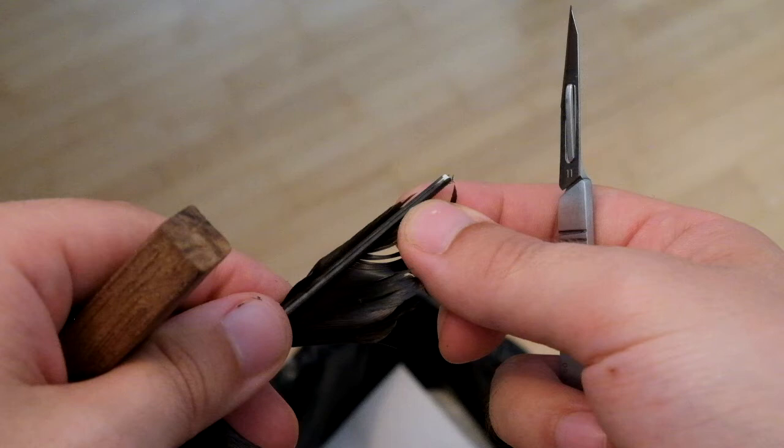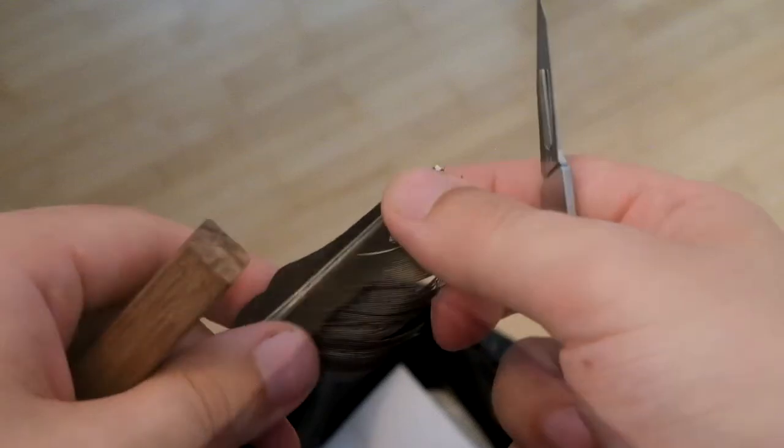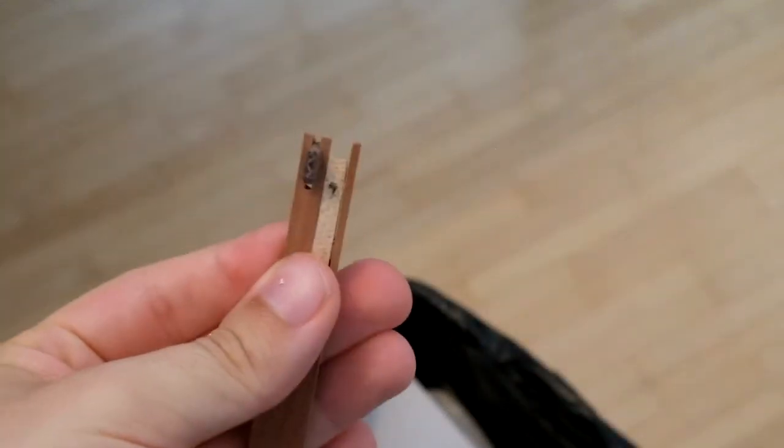Whatever you do, don't completely clear the entire feather of all the pith beforehand. This is one step which absolutely must be done bit by bit when cutting a plectrum, as the pith helps wedging the plectrum into the mortise of the tongue. Clear? Okay, so let's get the jack in need of a new plectrum.